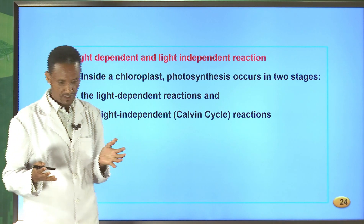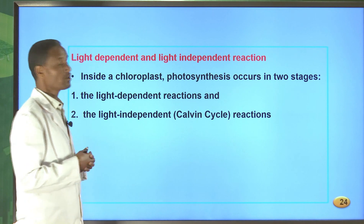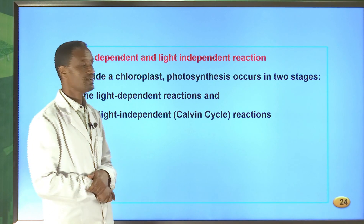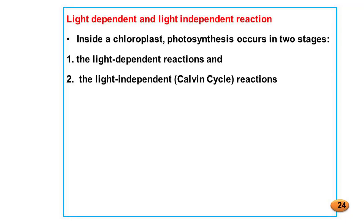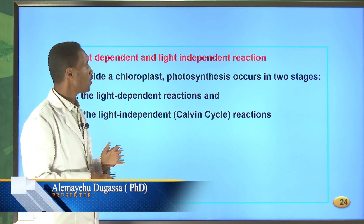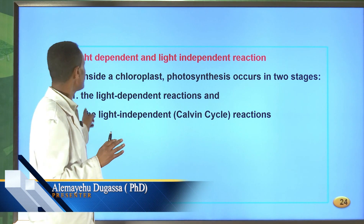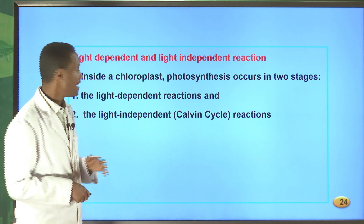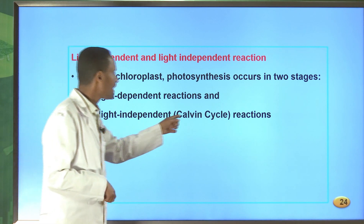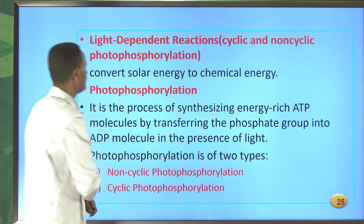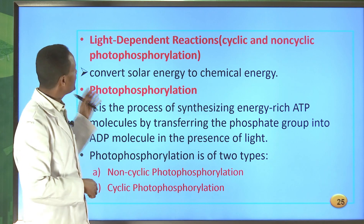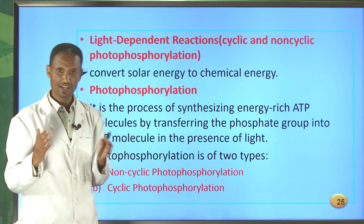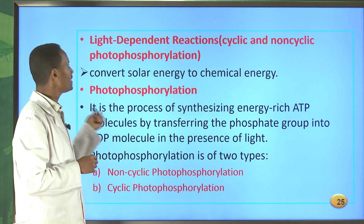Now let me come to the very important point in photosynthesis: the light-dependent and light-independent reactions. In this lesson we will mainly focus on the light-dependent reaction, and in the coming lesson we will see the light-independent reaction. Inside a chloroplast, photosynthesis occurs in two stages. The first stage is the light-dependent reactions, and the second stage is the light-independent or Calvin cycle reaction. The light-dependent reactions can be cyclic and non-cyclic photophosphorylation.